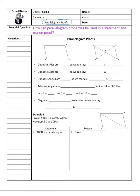We know that opposite sides in a parallelogram are congruent. So that means we could say AD is congruent to BC, and likewise AB is congruent to CD. Meaning that if a proof tells you it's a parallelogram, you can always jump right to saying those pieces are automatically congruent, which could be really helpful.